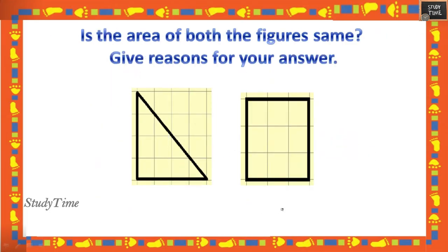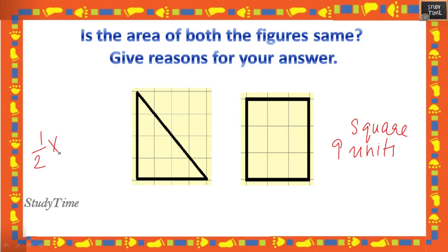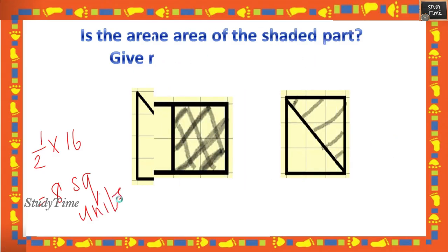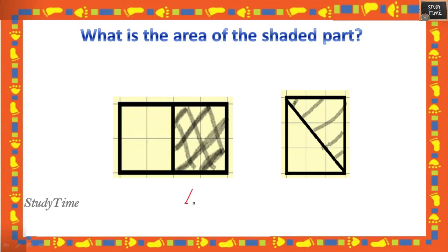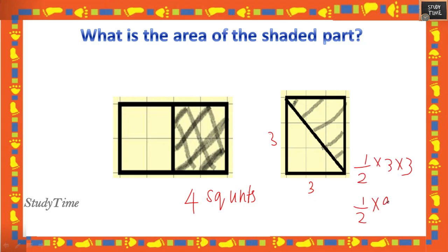Is the area of both figures the same? The first figure has 9 square units, the second also has 9 square units — but a triangle where bh = 4 × 4 = 16, so area = half of 16 = 8 square units. Both are not the same. What is the area of the shaded part? Here it is 4 square units; using half of 3 × 3 = half of 9 = 4.5 square units.